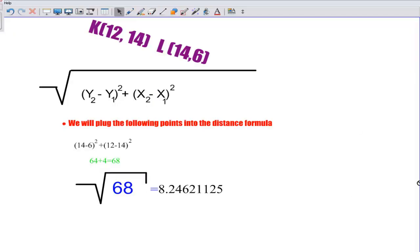Next is point K and point L, which is (12,14) and L is (14,6). We are going to plug into the distance formula and we are going to get the square root of 68, which is equivalent to 8.246.